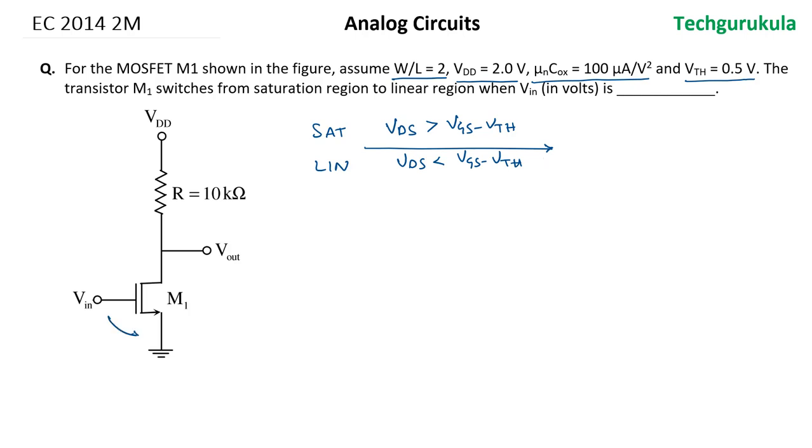In this figure, VGS is equal to Vᵢₙ. VDD is given 2 volts. Let's write the equation here: VDD is equal to the voltage drop across the 10 kilo ohms plus the voltage across the MOSFET. We know VDS should be equal to VGS minus VTH.